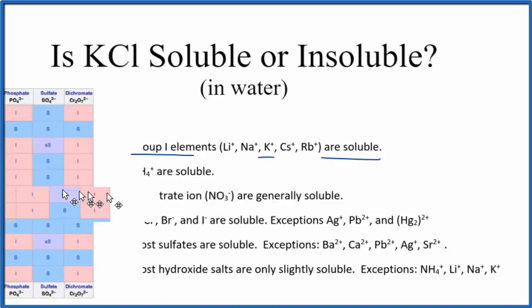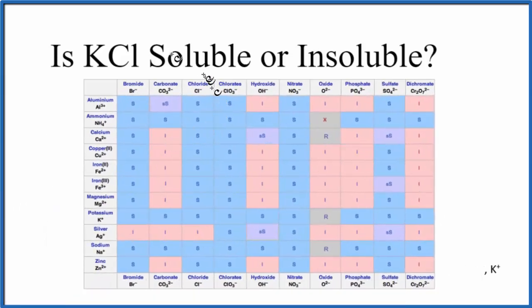We could also look at a solubility table. So on the solubility table, we go down and here's K+, potassium. And across the top, the negative ions, the anions. Here's the chloride ion. So we go over, down, and there's that S right there. That means that potassium chloride is soluble in water. So that's the same answer we got as the solubility rules.